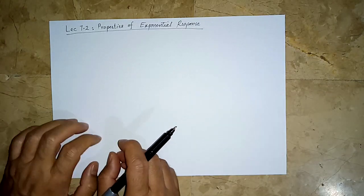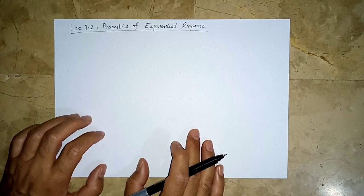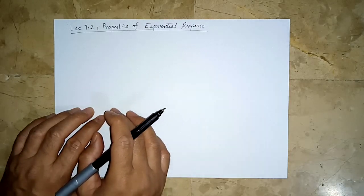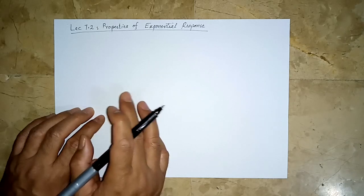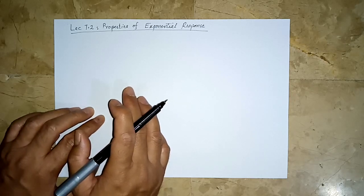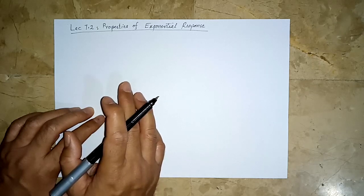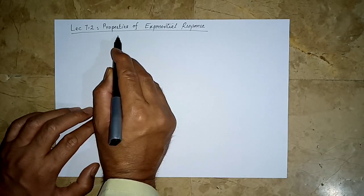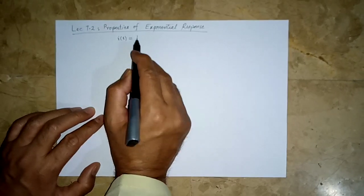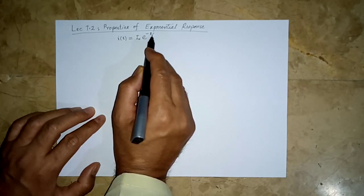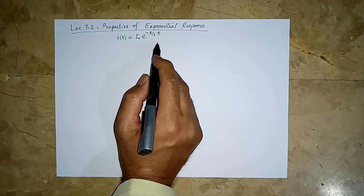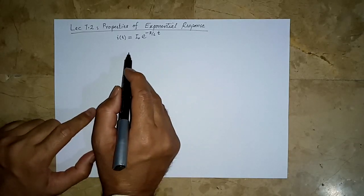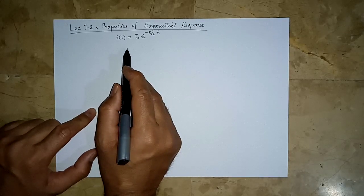Let us now come to a very interesting and important thing. We said that we are not going to solve differential equations but we are going to use the result and try to find through our intuition what the response of other circuits would be, because we have solved it once. So in trying to develop an intuition, this is very important — to understand the exponential response. For the RL circuit without any source, the current i(t) was equal to i_naught times e raised to the power minus R over L times t. This was how the current would behave once the inductor is allowed to lose energy.